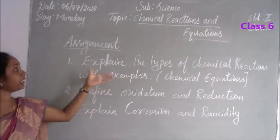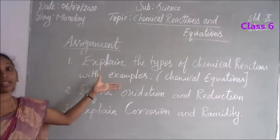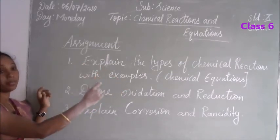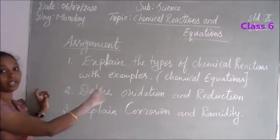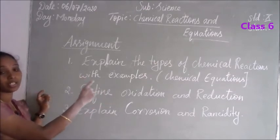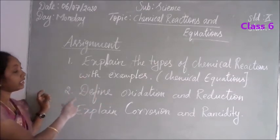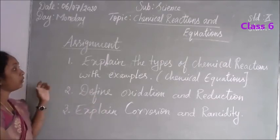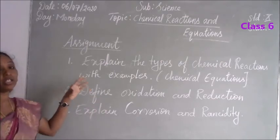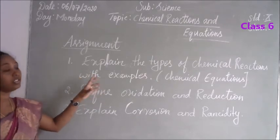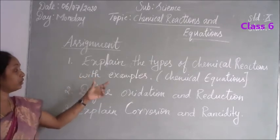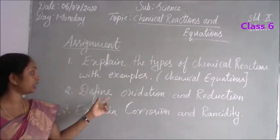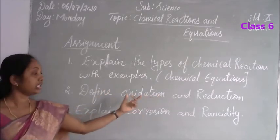For each chemical reaction — for example combination reaction — write the definition, write the equation, check whether it is a balanced equation or not, and write the components of the reaction. Once you understand, refer the textbook, understand, and write it in the same way. Second question: define oxidation and reduction — very very important.